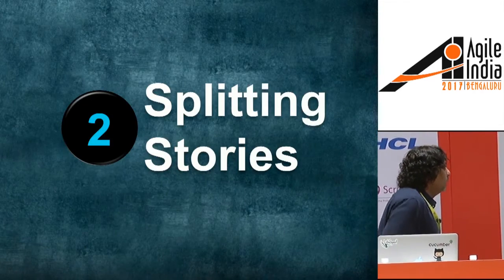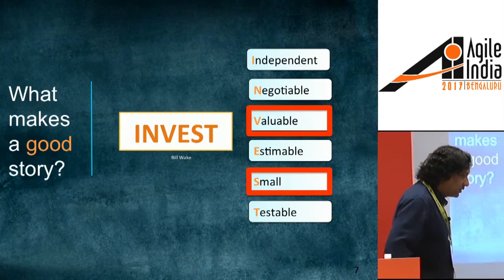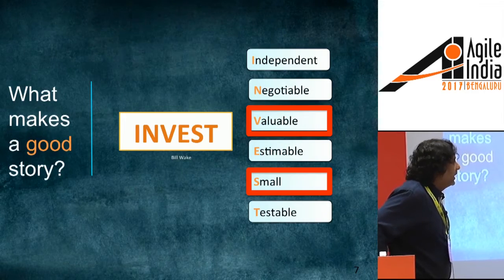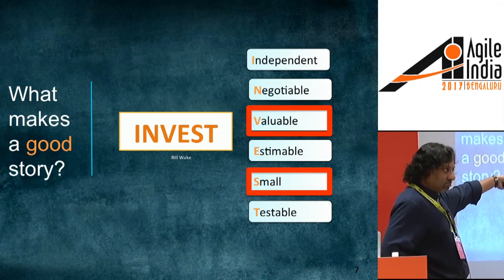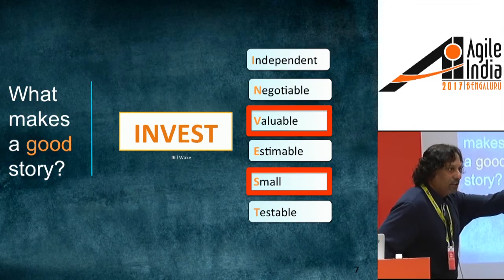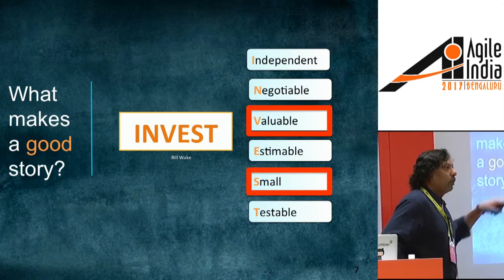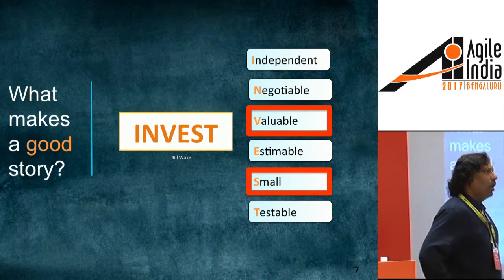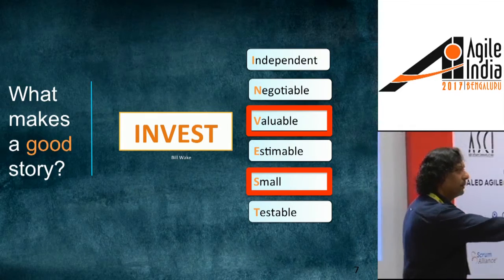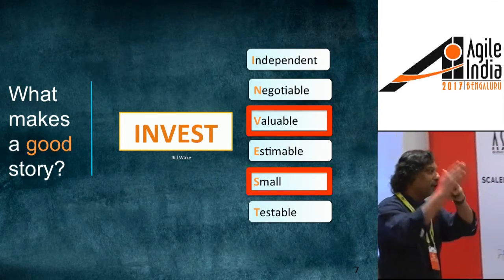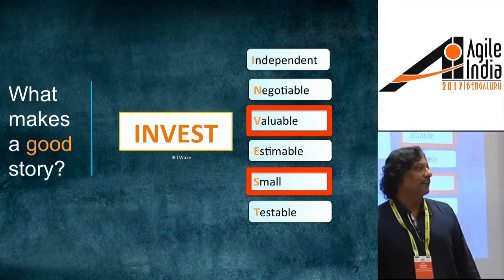Let's get into the actual splitting strategies. We want stories to be valuable — be it knowledge acquisition or end-user value — and we want them small. But why small, besides fitting into a time box? You want rapid feedback because it's an iterative process, and if you're going in the wrong direction, you want to know that sooner. To be able to fail fast.